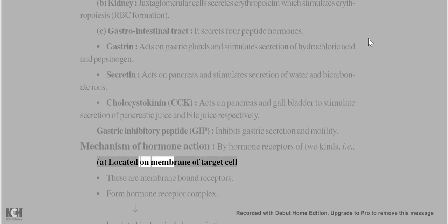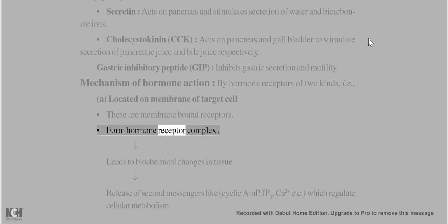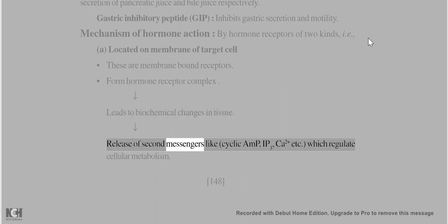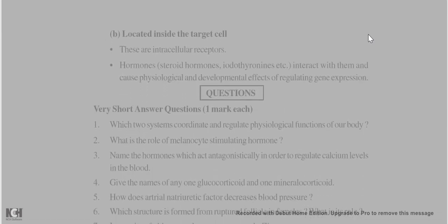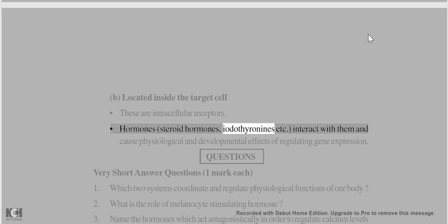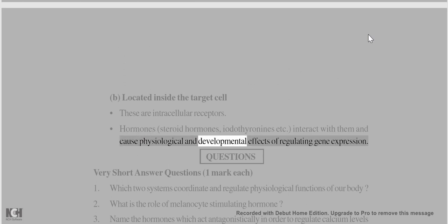Mechanism of hormone action: Hormone receptors are of two kinds. (a) Membrane-bound receptors on the target cell membrane form hormone-receptor complexes leading to biochemical changes, releasing second messengers like cyclic AMP, IP3, Ca²⁺, etc., which regulate cellular metabolism. (b) Intracellular receptors inside the target cell interact with steroid hormones and iodothyronines, causing physiological and developmental effects by regulating gene expression.